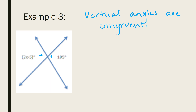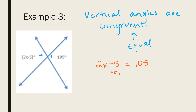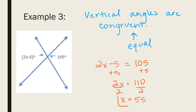Whenever I have a set of vertical angles, congruent means equal. So to set up my equation, I take the two vertical angles: 2x minus 5, and set it equal to the other angle, which is 105. Add 5 to both sides: 2x equals 110. Divide both sides by 2: x equals 55. We're not finding an angle here, so 55 is my answer for x. The other angle already equals 105 degrees, and substituting back confirms this.